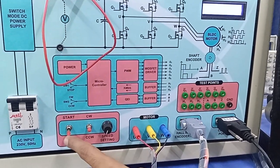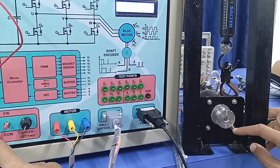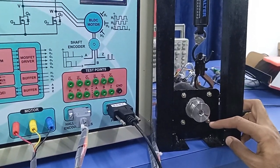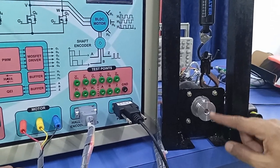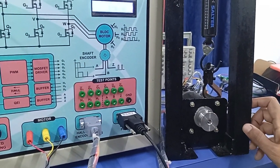Now if I give the start button, the motor will start rotating in the clockwise direction. Let us observe the motor. You can see the motor has started rotating in the clockwise direction. Now I will stop the motor.